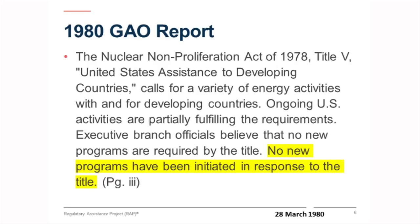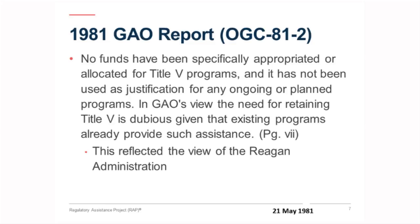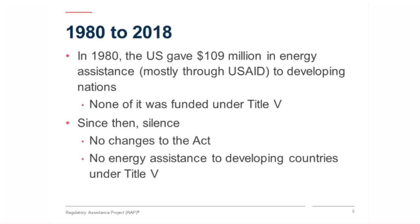There was another report in 1981 which said some interesting things and, once again, said no funds have been appropriated for Title V programs and it has not been used as a justification for any ongoing or planned programs. Even though, as GAO says, the need for retaining the title is dubious because existing programs are already doing this sort of stuff — and that's what the Reagan administration said. In 1980, the U.S. gave $109 million in energy assistance, mostly to USAID — about 75% of it — to developing nations, and none of it was funded under Title V. And since then, so far as I can tell, there's been radio silence.